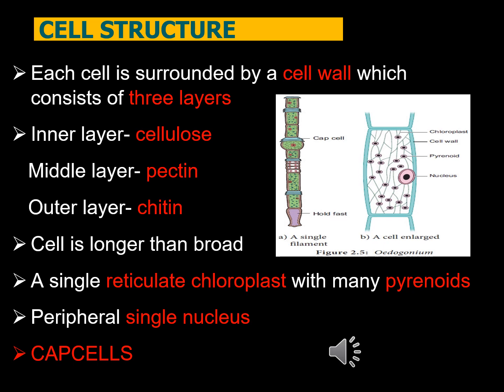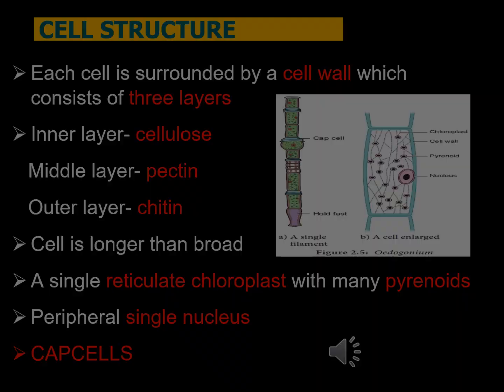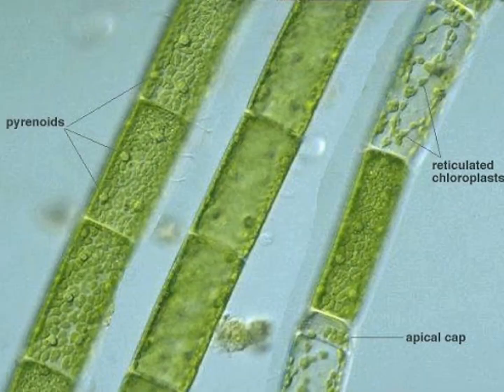The apical cap is actually the remnant of the parent cell wall left behind on one of the daughter cells after cell division. In this picture you can see pyrenoids which store starch, reticulated net-like chloroplasts, and cells with apical caps.